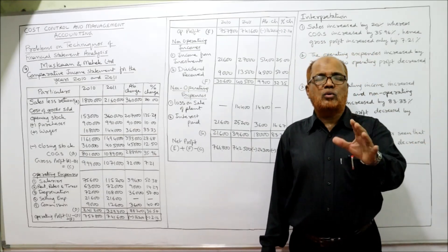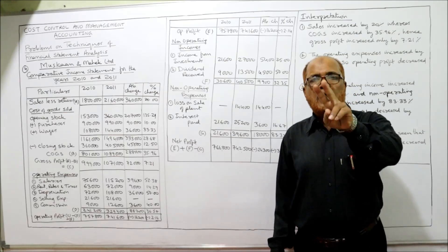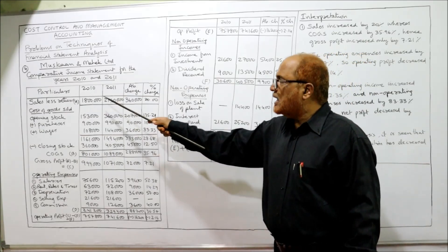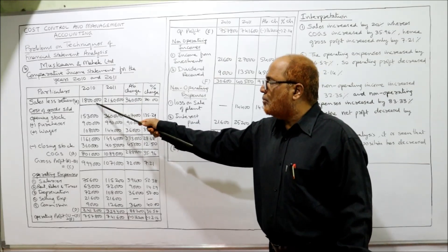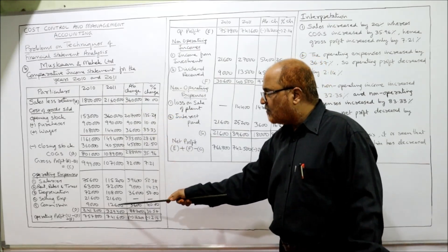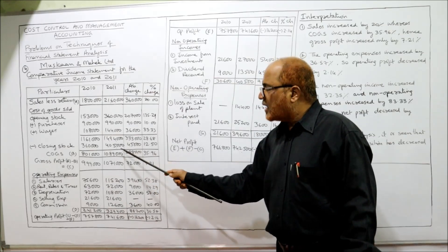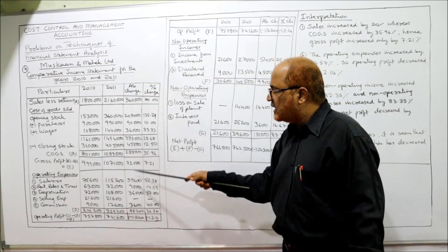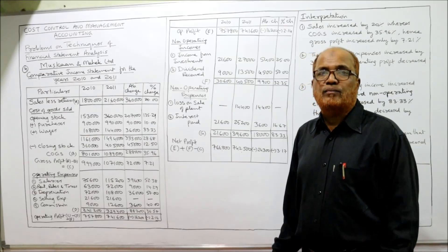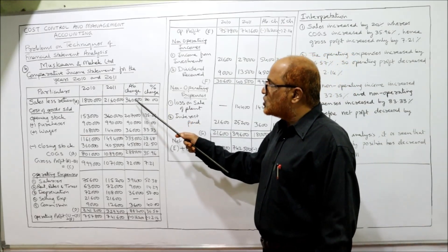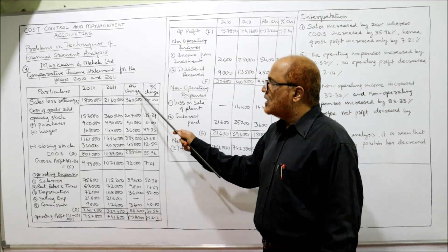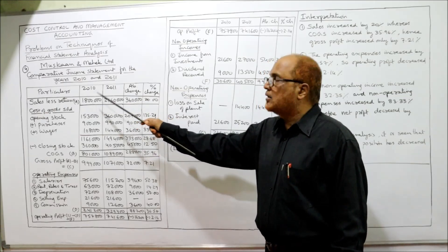For absolute change: current year value minus last year value. For sales: 21,60,000 minus 18,00,000 equals 3,60,000. Similarly all current year values minus last year values give the absolute change. For percentage change: absolute change divided by last year's value multiplied by 100. So 3,60,000 divided by 18,00,000 multiplied by 100 equals 20%.